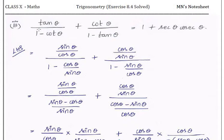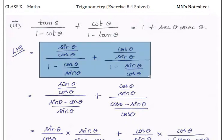Since tan = sin/cos and cot = cos/sin, we convert the LHS terms accordingly. After expressing in sin and cos, there is a common minus sign in both terms. Taking LCM — which is sin·theta — the numerator of the first term becomes sin·theta minus cos·theta, and for the second term after LCM it is cos·theta minus sin·theta.